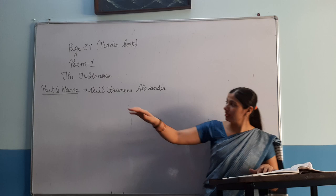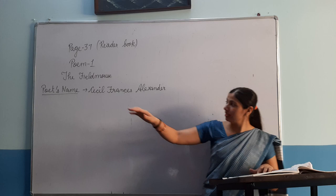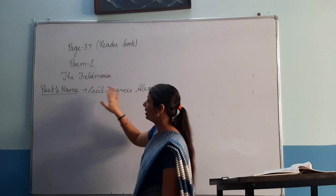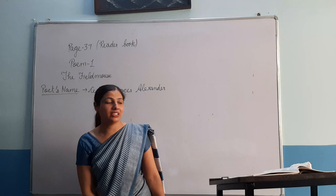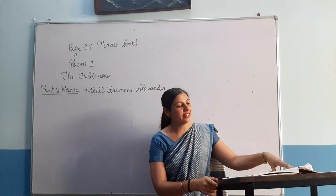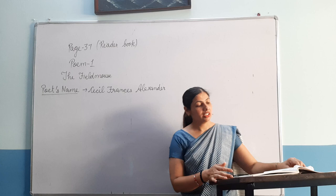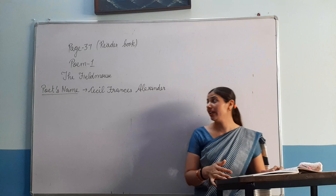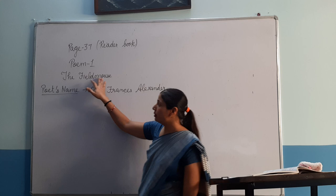The name of the poem is 'The Field Mouse.' The poet's name is Cecil Francis Alexander. Today we are going to read this poem. Dear students, whenever you read any poem or any lesson, always try to learn the name of the poet or the writer, because in exams questions can be framed on the poet and the writer.